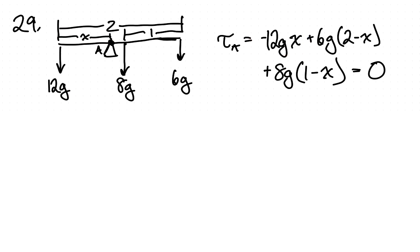We have a clockwise moment that has a weight from the force 6g, and then this distance here is 2 minus x. So 2 minus x gives us this distance here.